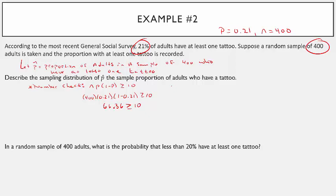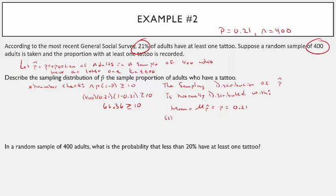Thus the sampling distribution of p-hat is normally distributed with mean mu sub p-hat equal to the population proportion 0.21, and standard deviation sigma p-hat equal to the square root of 0.21 times (1 minus 0.21) all over 400.